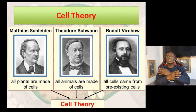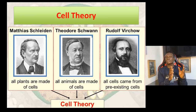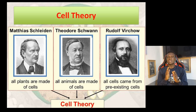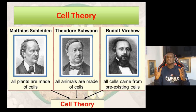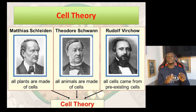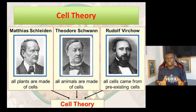So they concluded that all living organisms are made up of cells. Another scientist, Rudolf Virchow, addressed the question of where cells come from — concluding that cells must have come from a pre-existing cell. Matthias Schleiden in 1838 discovered that all plants are made up of cells. Theodore Schwann in 1839 published that all animals are made up of cells. These are the key contributions of scientists to the cell theory.